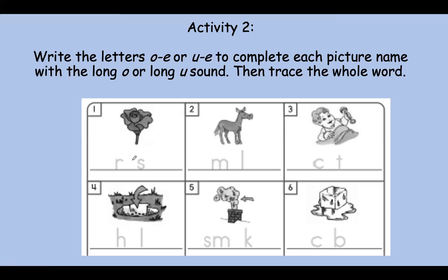Right, it's the O — the long O sound. Nice work. Let's trace rose. This was the animal I used in the example. This is a mule. Can you say that slowly? What do you hear in the middle? You got it — it's the long U. Let's trace it.